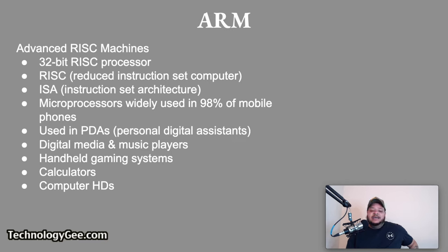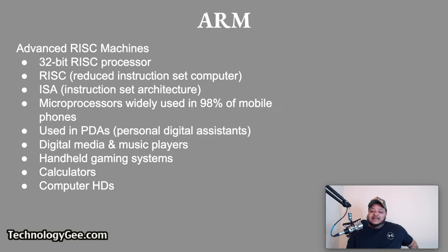ARM stands for Advanced RISC Machines. The ARM processor is a 32-bit RISC processor, meaning it uses the RISC ISA platform. RISC stands for Reduced Instruction Set Computer, and ISA stands for Instruction Set Architecture. ARM processors are microprocessors widely used in mobile phones — as many as 98% of mobile phones have an ARM processor. They are also used in PDAs, digital media and music players, handheld gaming systems, calculators, and even some computer hard drives.